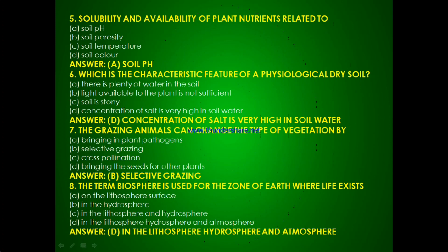Question 7: Grazing animals can change the type of vegetation by — bringing in plant pathogens, selective grazing, cross pollination, or bringing seeds of other plants? The answer is B, by selective grazing.